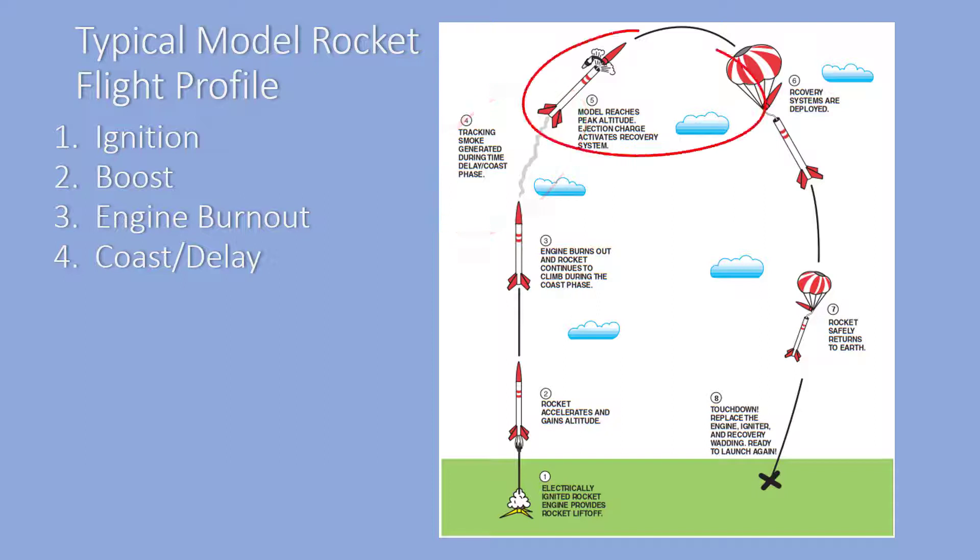The peak or highest altitude of the rocket is called apogee. If we've designed a rocket correctly and picked the correct engine, the ejection charge will fire just before or just after apogee.